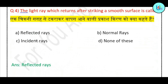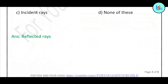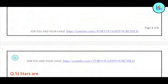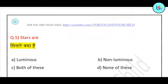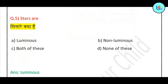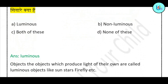Question number 5: Stars are — luminous, non-luminous, both of these, or none of these? Luminous ka matlab hota hai wo object jo khud ki light produce karta hai. Correct answer is: luminous.